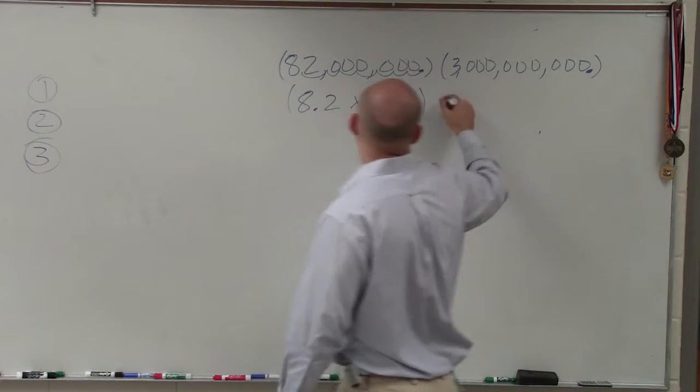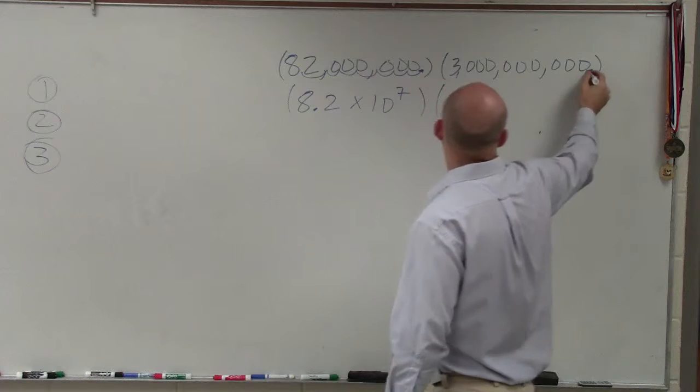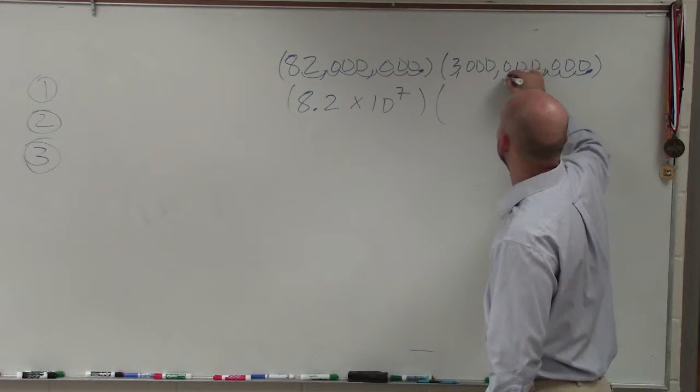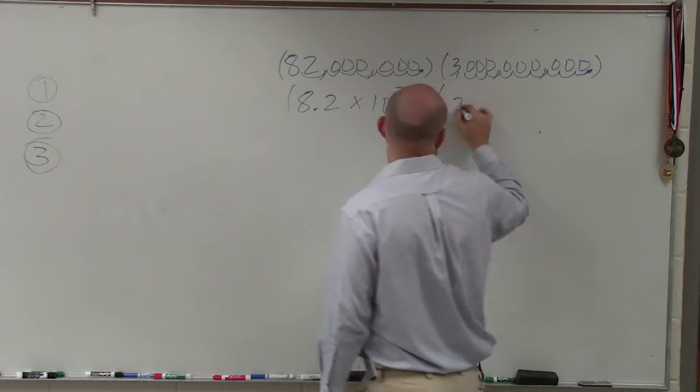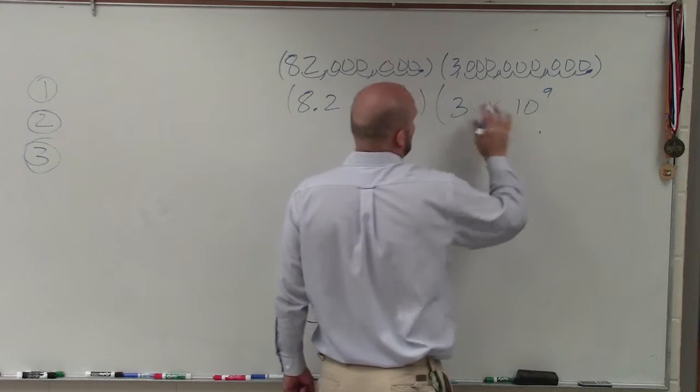Then I multiply that number times—counting the places: 1, 2, 3, 4, 5, 6, 7, 8, 9—so 3 times 10 to the ninth power.